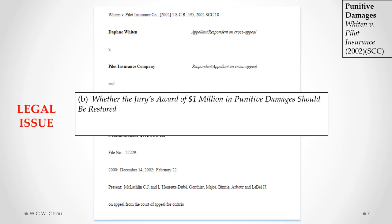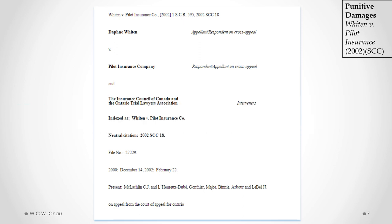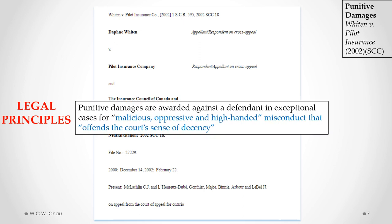The legal issue the Supreme Court of Canada dealt with was whether the jury's award of one million dollars in punitive damages should be restored. The legal principles from this case are that punitive damages are awarded against the defendant in exceptional cases for malicious, oppressive, and high-handed misconduct that offends the court's sense of decency.